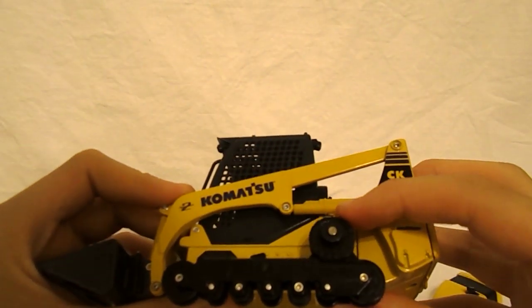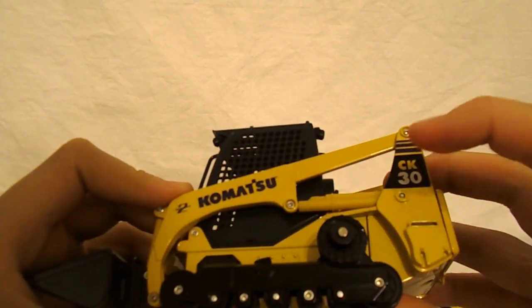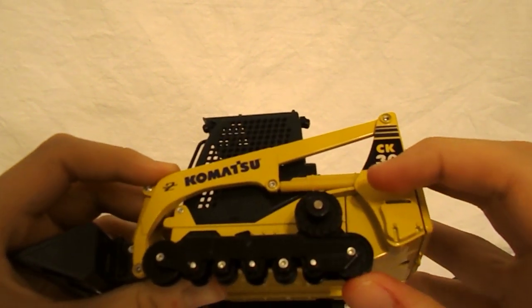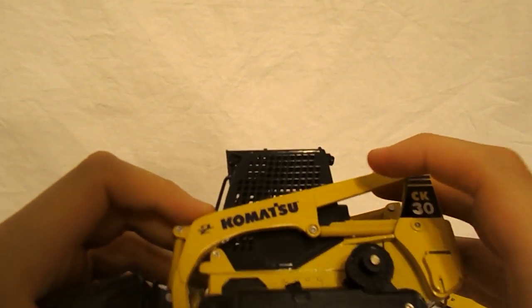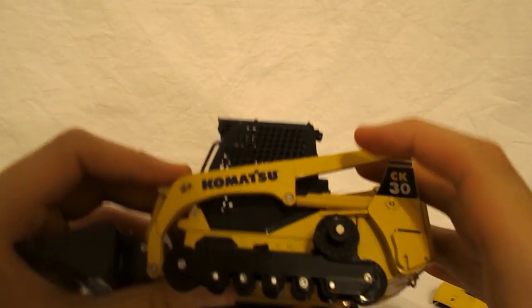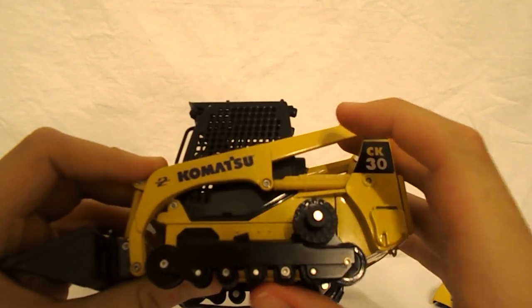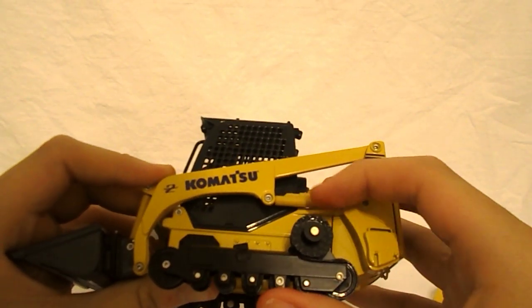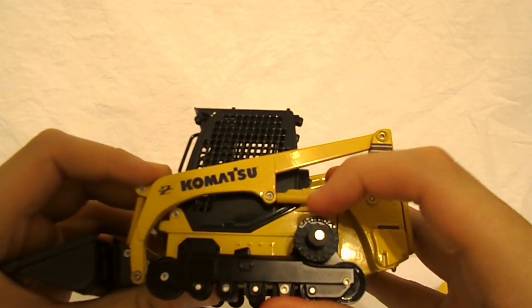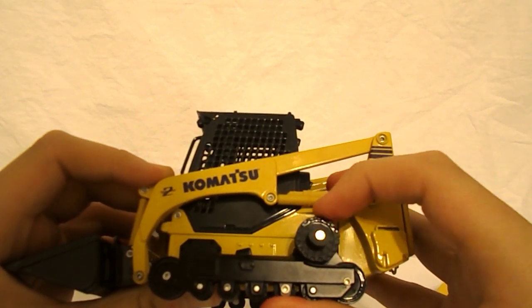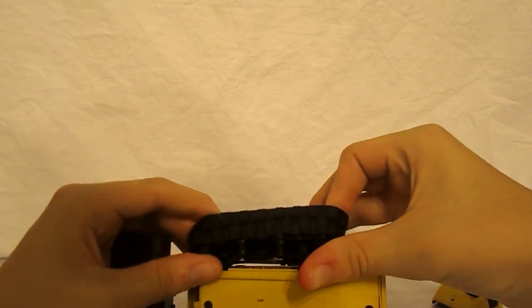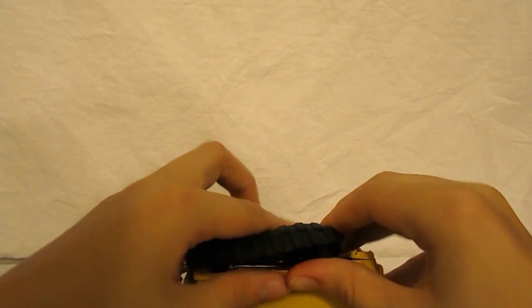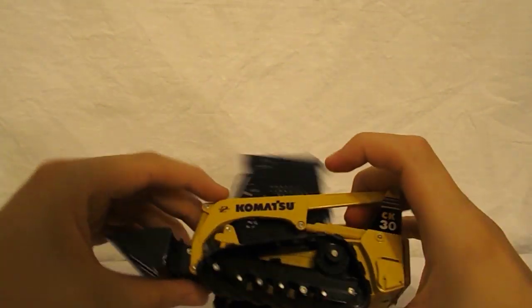They actually greased the sprocket on here so the tracks can roll easier. And also, two of the five rollers do actually work. This one and this one. As you can see, if you can see that shiny part on the sprocket, that is grease that they put on there themselves. I did not touch it. I really do think this is a really, really nice model, though.